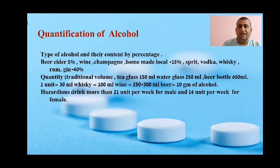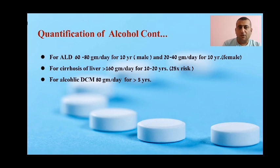One unit of alcohol equals 30 ml of whiskey or spirits, which equals 100 ml of wine or champagne, which equals 250–300 ml of beer or cider — all equal to 10 grams of alcohol. Dangerous drinking is more than 21 units per week in males and 14 units per week in females. Risk of alcoholic liver disease increases when male patients take 60–80 grams per day for 10 years and female patients take 20–40 grams per day for 10 years. For cirrhosis of liver, more than 160 grams per day for 10–20 years increases risk by 25 folds. For alcoholic dilated cardiomyopathy, 80 grams per day for more than 5 years is important history.